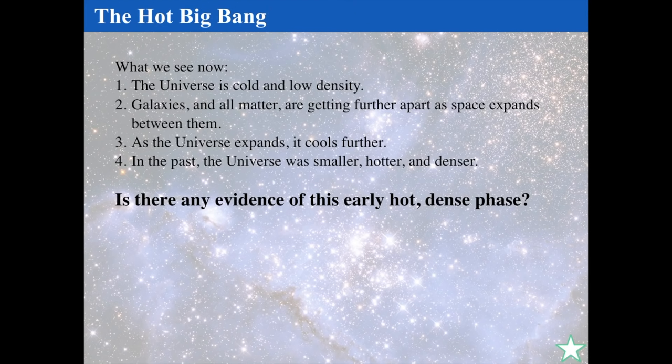So what we see now: the universe is old, cold, and low density. Galaxies and all matter are getting further and further apart as space expands between them. As the universe expands, it cools even further. In the past, the universe must have been hotter, smaller, and denser. Next time we'll see if there's any evidence for this early, hot, dense phase of the universe — that's the hot Big Bang. I've given you the description of how things expand with time, but now: where was that starting point? That's the hot, dense phase we'll get to next time.